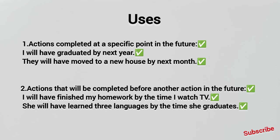Another example: 'She will have learned three languages by the time she graduates.' When she graduates, she will have already learned three languages. So here there are two actions — one is that she will graduate, and before that, the other action will be completed. Thank you so much for watching this video. If you liked the video, please comment and let me know.